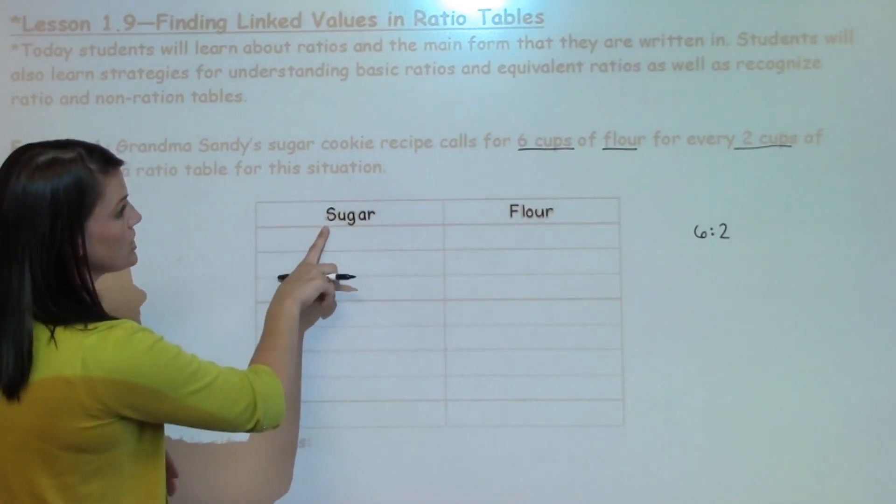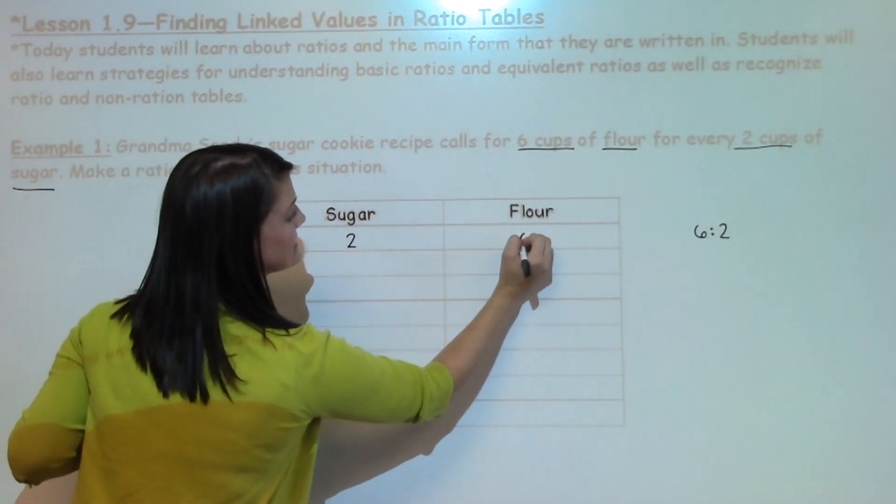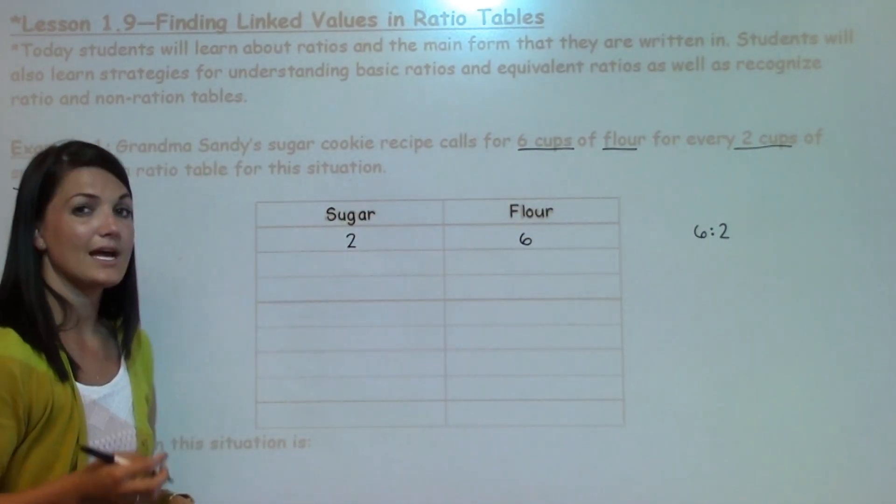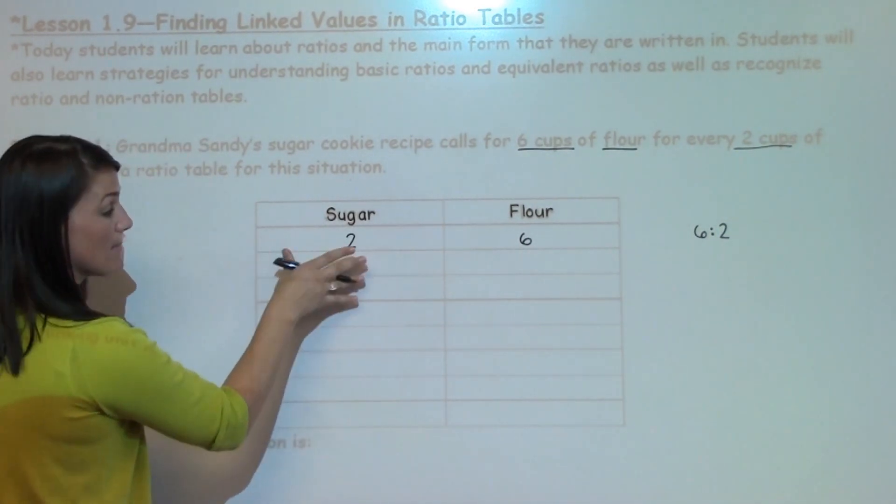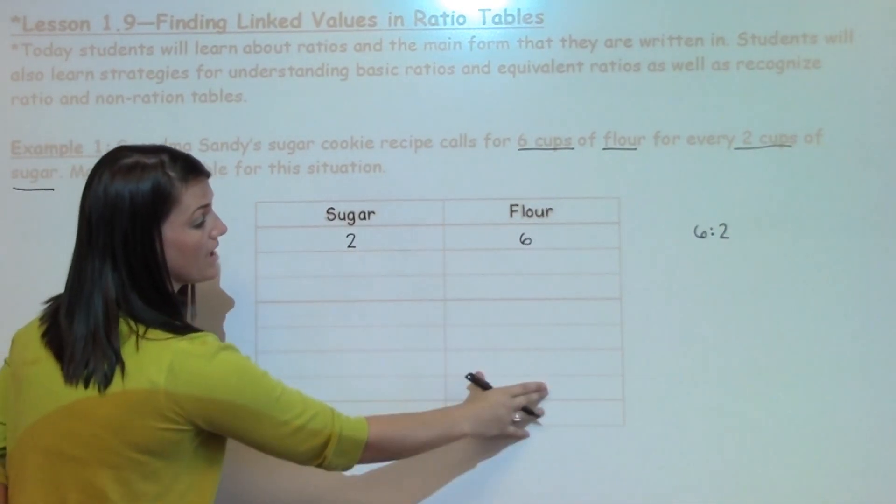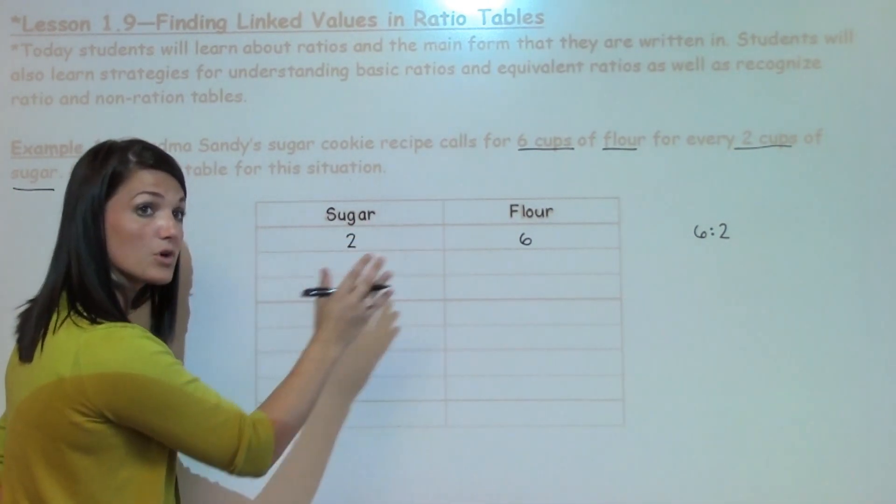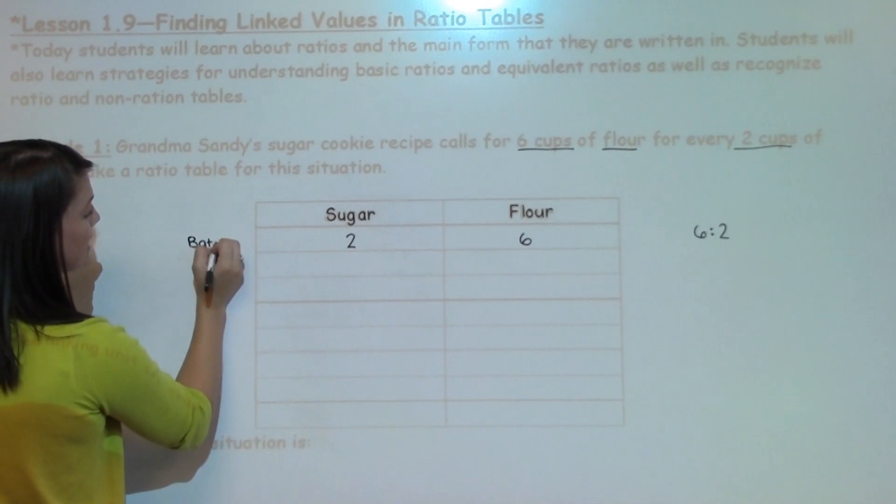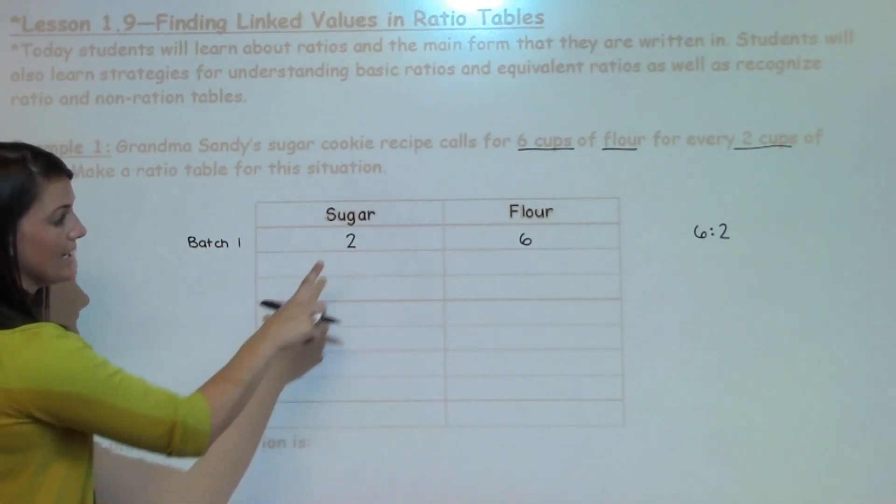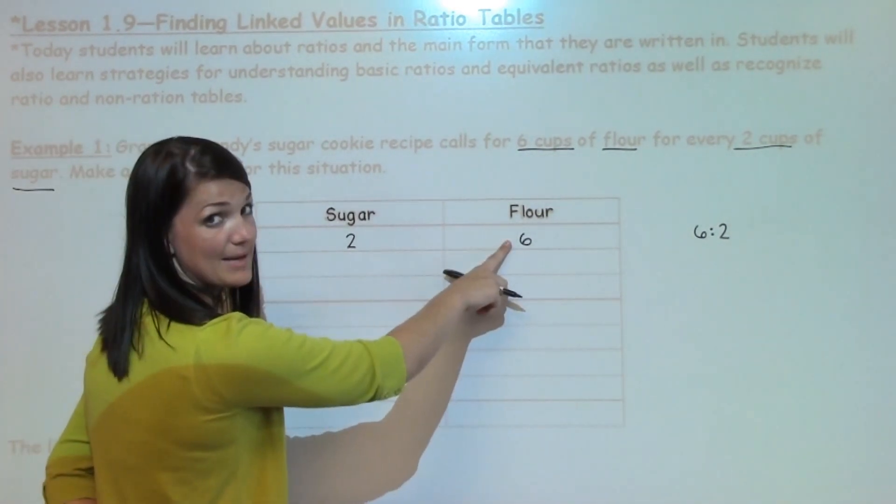If I have sugar, we have 2 cups of sugar for every 6 cups of flour. Because we're working with a ratio table, I know that my amounts are going to increase going down instead of across. This is just for one batch of cookies. So in batch 1, I need 2 cups of sugar, 6 cups of flour.